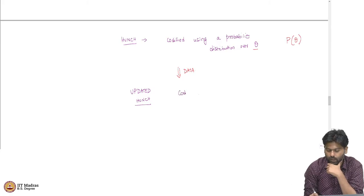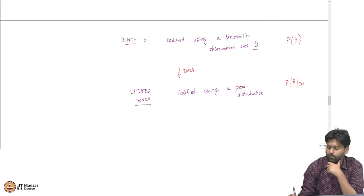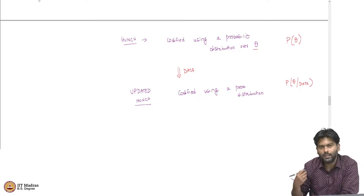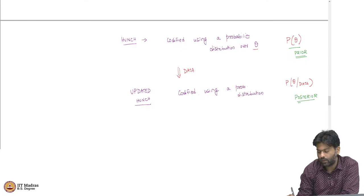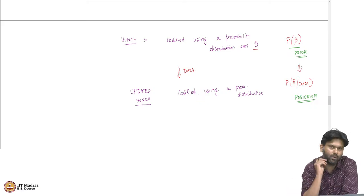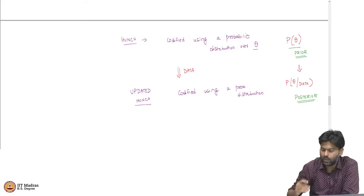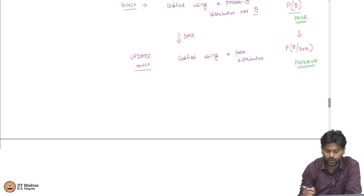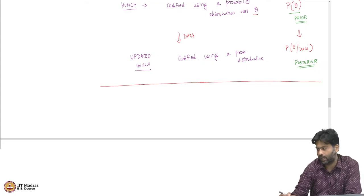How can we codify the updated hunch? It can be codified using a probability distribution — but not p(θ) anymore. Instead, it is p(θ | data). This idea of going from the prior distribution over theta to the posterior distribution of theta after observing data is what is called the Bayesian way of doing things. You have a hunch, you see data, you update your hunch.